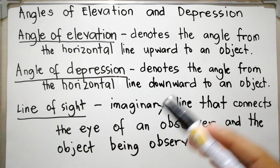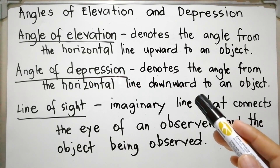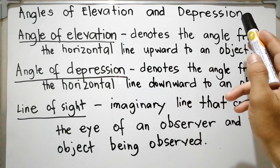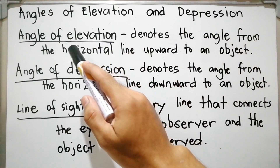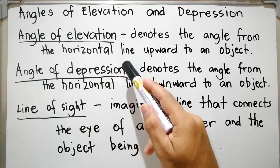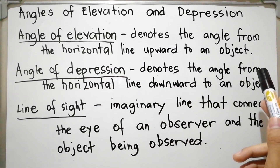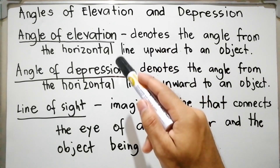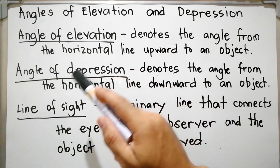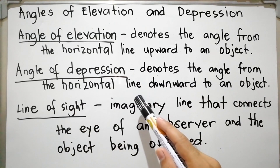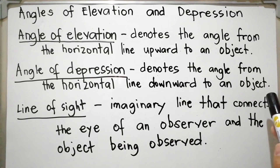Hi everyone, welcome back to my YouTube channel. Today we will talk about angle of elevation and angle of depression. The angle of elevation denotes the angle from the horizontal line upward to an object. The angle of depression denotes the angle from the horizontal line downward to an object.